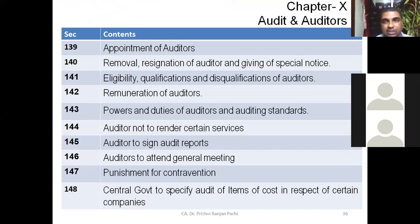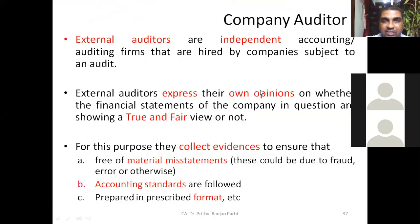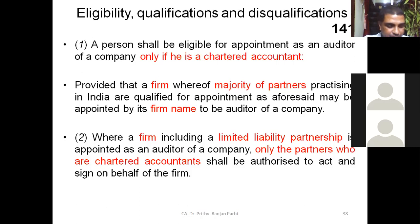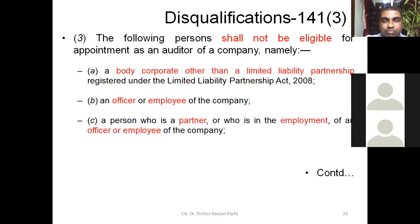We are discussing Chapter 10 of the Companies Act 2013, various aspects relating to audit — legal aspects relating to audit. We were discussing this in our previous class. In that context we were talking about qualifications of an auditor. We have understood that, and there was a question about the meaning of body corporate. A body corporate cannot be appointed as the auditor of the company.